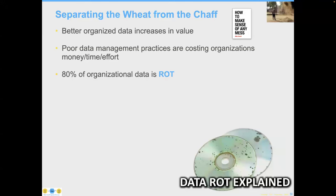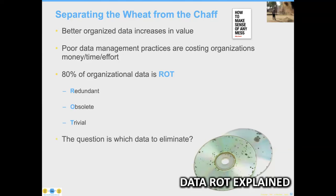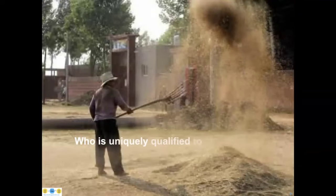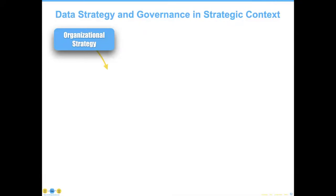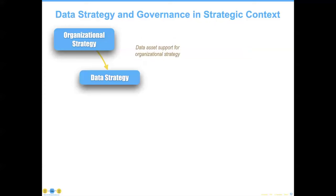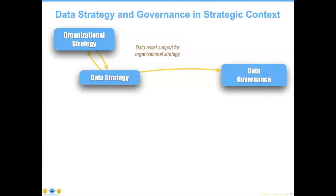Here's another thing that's critically important: 80% of all of your organizational data is ROT — data that is redundant, obsolete, or trivial. The question is, of course, which data to eliminate. Most enterprise data is never analyzed at all. So who is most qualified to do this kind of analysis work? These are going to be the people you have involved in this — you want to get them involved in your data governance effort. Remember, data strategy exists to support the organizational strategy and no other reason. Sure, you may come up with some ancillary wins, but the principal reason is supportive organizational strategy.